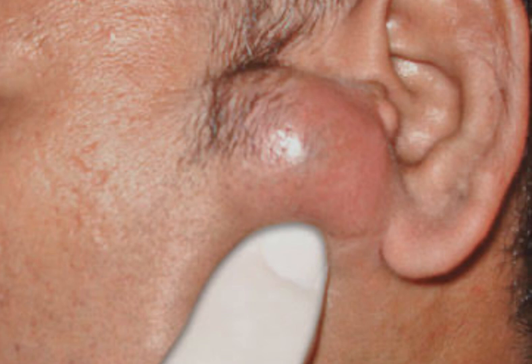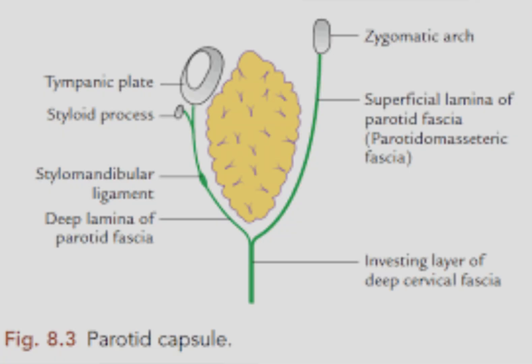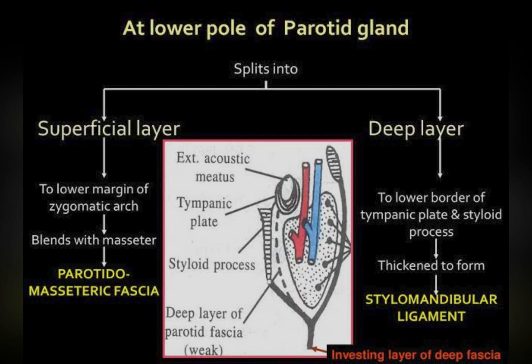This is due to the attachment of the deep cervical fascia to the zygomatic arch. Here you see the deep cervical fascia splits to enclose the parotid gland, getting attached to the zygomatic arch and the tympanic plate. At the lower pole of the parotid gland, the deep cervical fascia splits into a superficial layer which forms the parotid masseteric fascia, and a deep layer — the stylomandibular ligament.